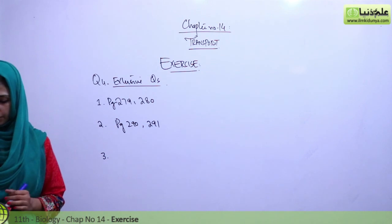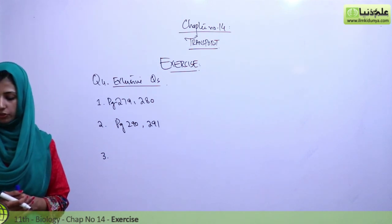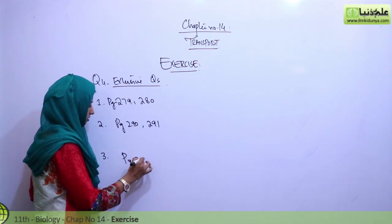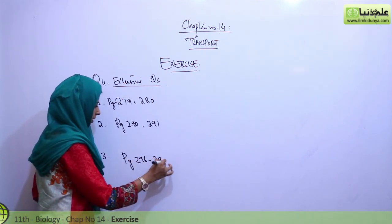Third is, how does the pressure flow theory explain the movement of sugars through a plant? This is on page 296 and 297.